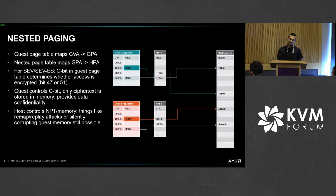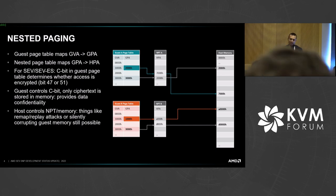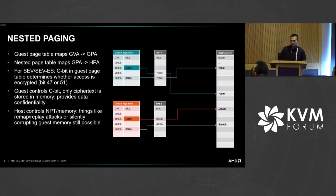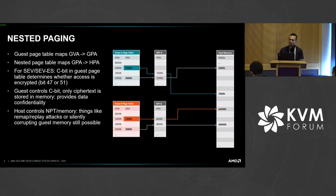Before we get into how secure nested paging works, a quick overview of how regular nested paging works. With regular nested paging, we have a guest page table that maps the guest virtual address to guest physical address, and a nested page table which maps that guest physical address to a host physical address. In the case of SEV and SEV-ES, there's a C bit that can be set in the guest page table to indicate whether that guest physical address should be treated as a private page or a shared page. For private pages, we use encryption to provide data confidentiality — whenever the guest writes to a GPA with the C bit set, the memory controller encrypts that data using the guest's encryption key.